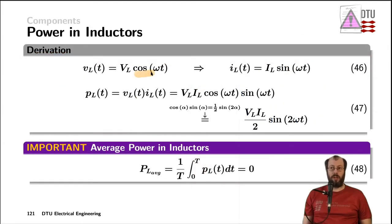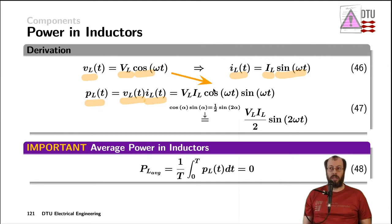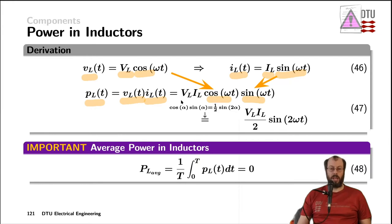Using a cosine waveform as a test voltage across an inductor with amplitude VL, we get the current through the inductor as a sine wave with its own amplitude IL. Equally to the resistor, the instantaneous power in an inductor is the multiplication of its voltage and its current, both as a function of time. Inserting the cosine test voltage and the resulting current leaves us with the multiplication of a cosine and a sine waveform, both with the same frequency omega t, and the multiplication of the amplitudes in front.